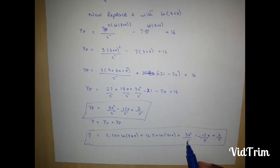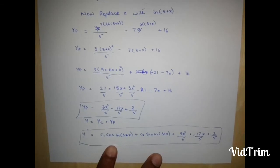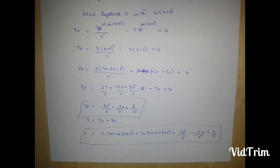Our yp is equal to plus 3x square upon 5 minus 17x upon 5 plus 2 upon 5. This is our answer.